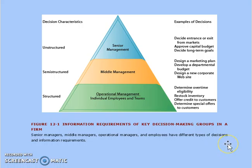For example, the structured decisions required at the operational level include: determining overtime eligibility, restocking inventory, offering credit to customers, and determining special offers to customers. Whereas in middle management, where decisions are of semi-structured type, examples include: designing a marketing plan, developing a departmental budget, and designing a new corporate website.